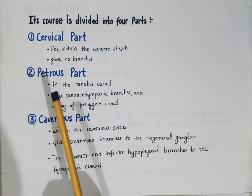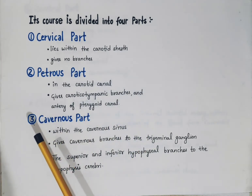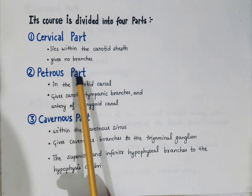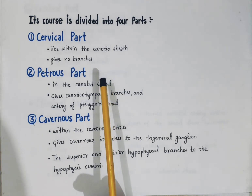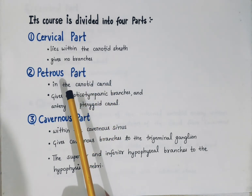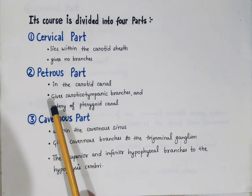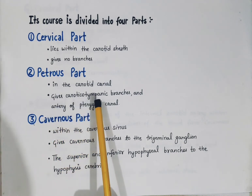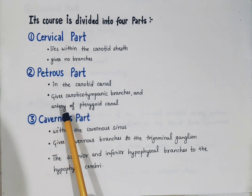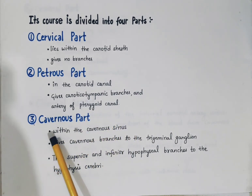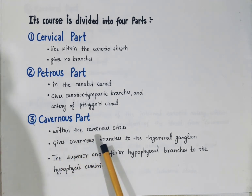The course of the internal carotid artery is divided into four parts. The first is the cervical part, which lies within the carotid sheath and gives off no branches. The second is the petrous part, which lies in the carotid canal and gives the caroticotympanic branches and the artery of the pterygoid canal. The third is the cavernous part, which lies within the cavernous sinus.